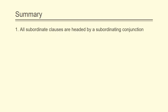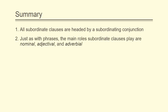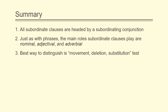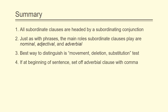Okay, so wrapping everything up: all subordinate clauses are headed by a subordinating conjunction — that is essentially the clue you are looking for to spot any subordinate clause. Just as with phrases, the main roles that subordinate clauses play are going to be nominal, adjectival, and adverbial. The best way to distinguish between the different kinds of subordinate clauses — nominal, adjectival, and adverbial — is to try the movement, deletion, and substitution tests. And finally, when talking about adverbial conjunctions specifically, if they are at the beginning of a sentence, we set off adverbial clauses with a comma.